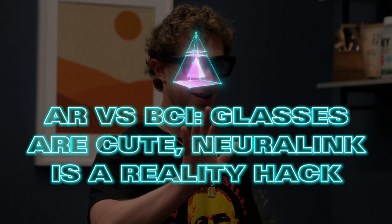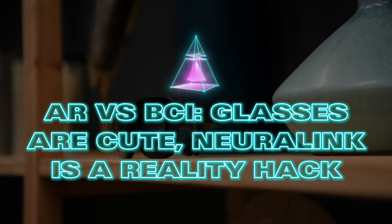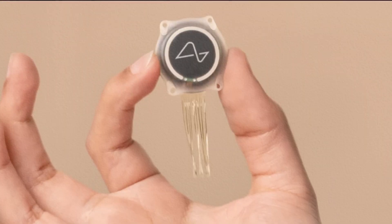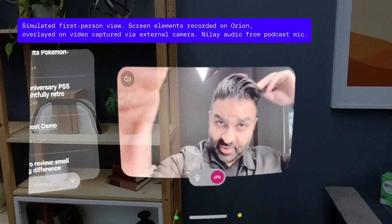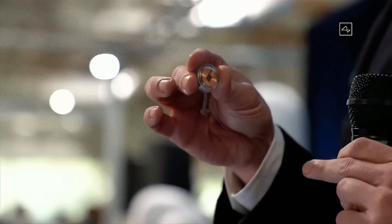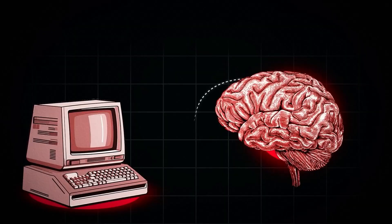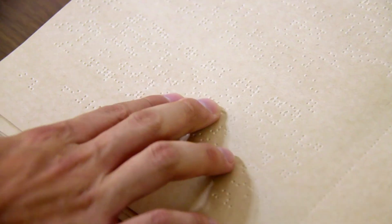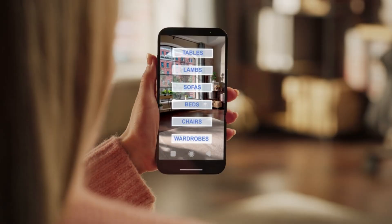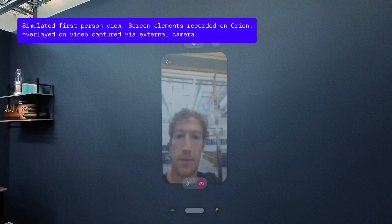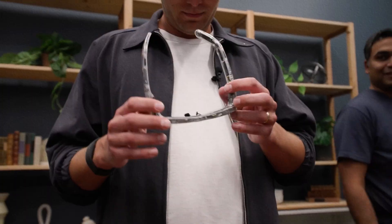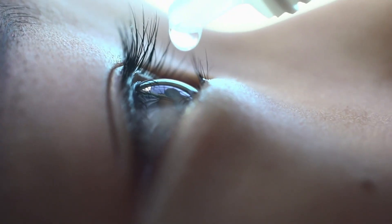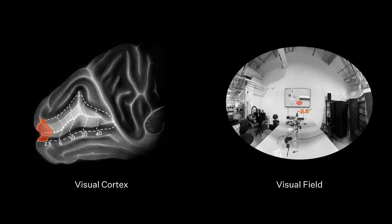AR versus BCI. Glasses are cute. Neuralink is a reality hack. Let's talk comparisons. Meta's Orion glasses versus Neuralink's Blindsight. Meta wants to augment your reality with floating menus and holograms. Neuralink wants to replace your reality with a new digital input stream wired directly into your brain. One gives you Snapchat filters. The other gives sight to the blind. Meta's hardware admittedly is sleek. Their Orion prototype uses laser-based holographic projectors to overlay digital visuals on the real world. It's impressive, but it still relies on your eyes working and not being replaced by cameras mounted on your skull.